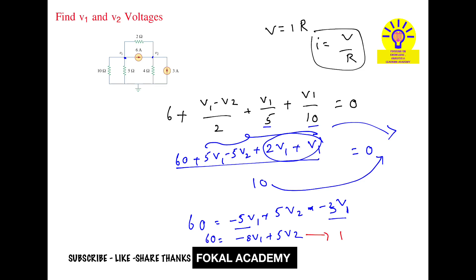Let's consider this equation 1. So equation 1 is: 60 equals minus 8v1 plus 5v2.